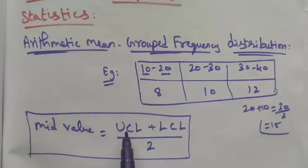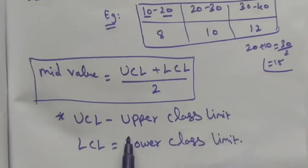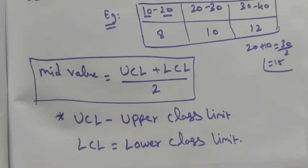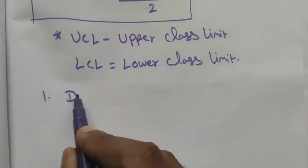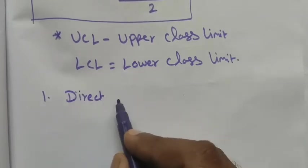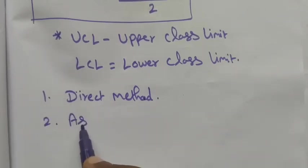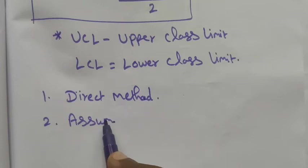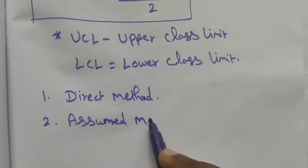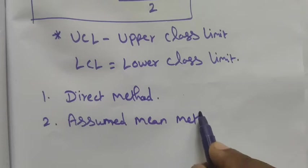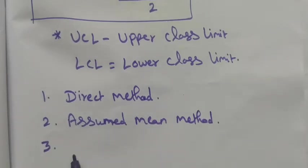So the mid value is found using UCL and LCL — upper class limit and lower class limit. There are three different methods to find the arithmetic mean for a grouped frequency distribution: the first method is the Direct Method, the second is the Assumed Mean Method, and the third is the Step Deviation Method.